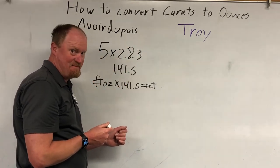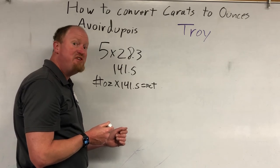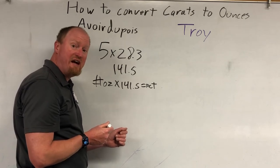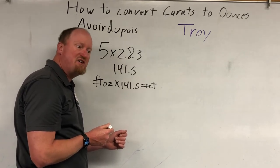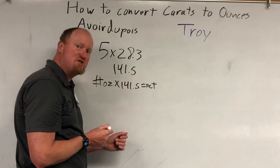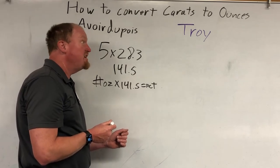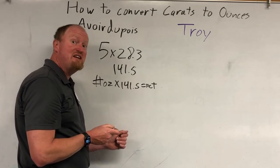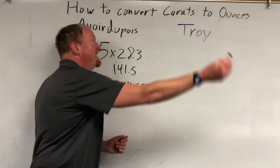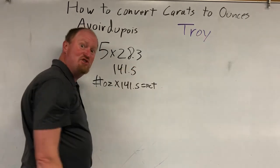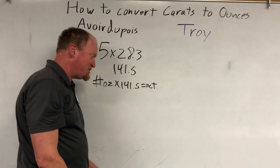But for the kinds of things you measure in carats — those are expensive things, precious metals and gems and stuff like that — the ounces that they use for those are troy ounces.